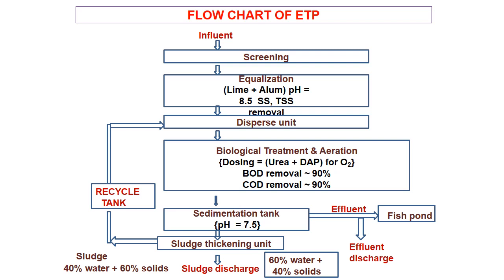Here we can see the complete flow of operation in the effluent treatment plant. There is influent, screening, equalization and mixing, then pH adjustment, and dispersive mixing. It goes for biological treatment — aerobic or sometimes anaerobic — and chemicals are added. BOD and COD are reduced by 90%. Then it goes to the sedimentation tank. The pH is checked and treated water is discharged to water bodies or fish ponds. The thick sludge undergoes thickening treatment, water content is reduced, and the thick sludge goes back for recycling in biological treatment.